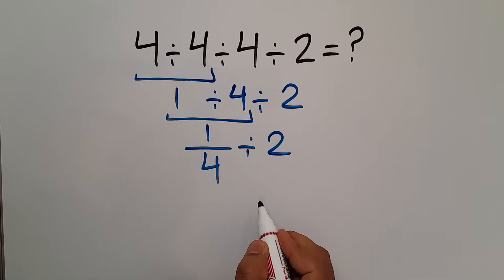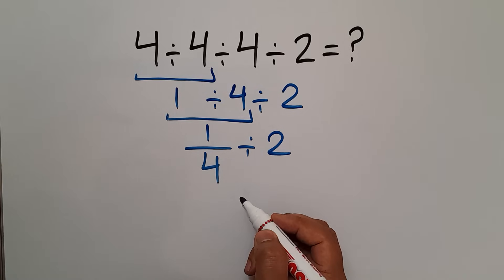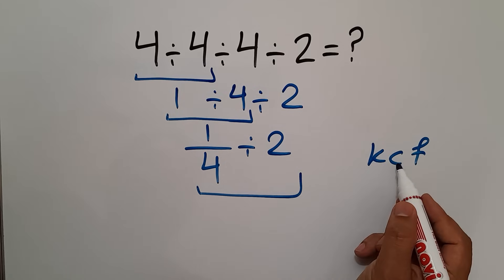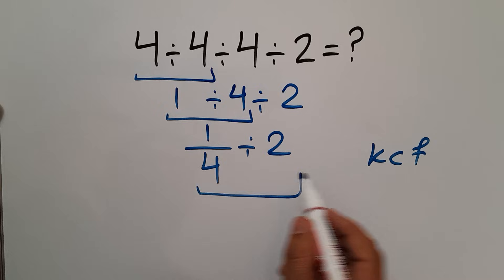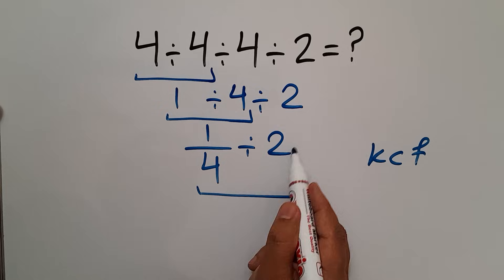Now 1 over 4 divided by 2. According to the KCF rule, K stands for keep, C stands for change, and F stands for flip. Keep the first fraction, change the division to multiplication, and flip the second fraction.